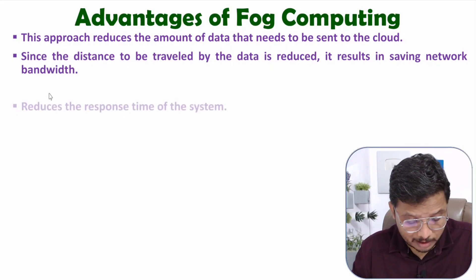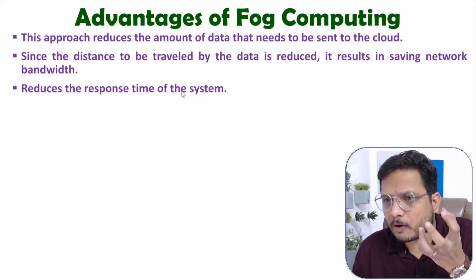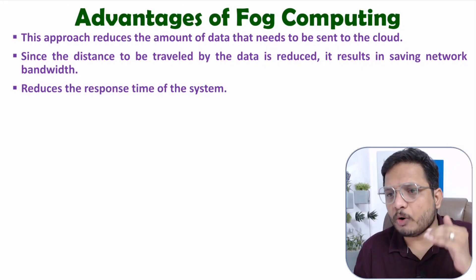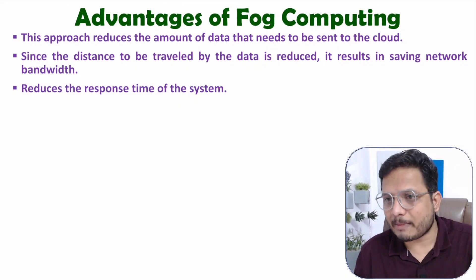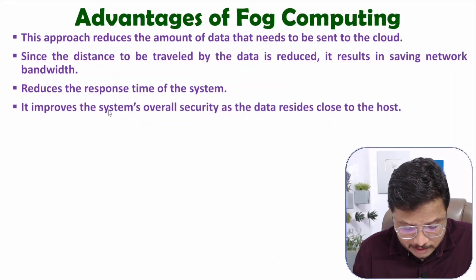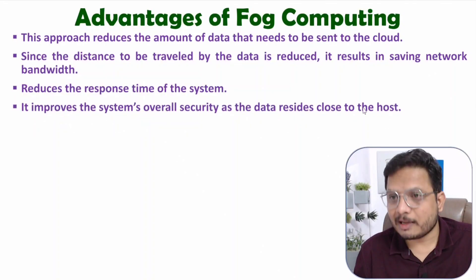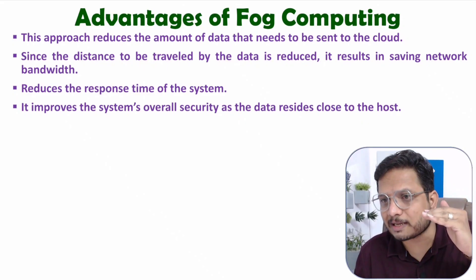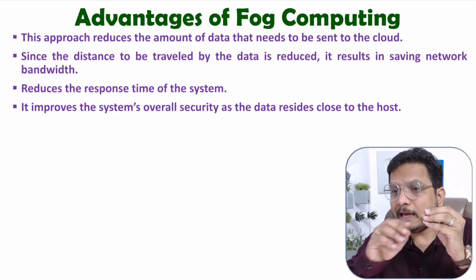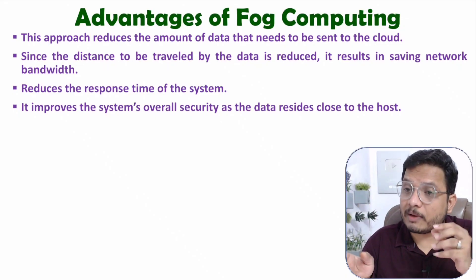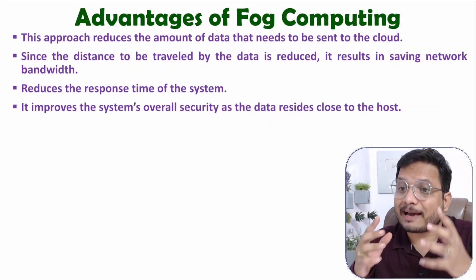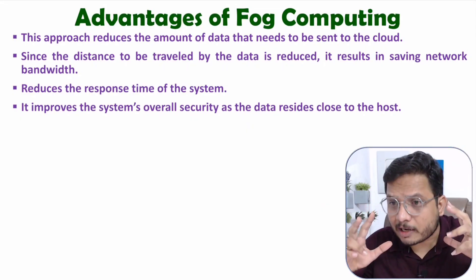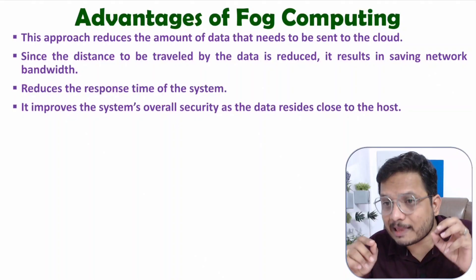Fog computing reduces response time because the fog cloud is very near to the end device, so latency is very less and response time improves — making it preferable for real-time applications. It also improves the system's overall security, as data resides closest to the host. Since the fog cloud is near the end device, hackers at a larger distance cannot easily access the data, unlike data stored on the cloud.